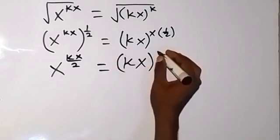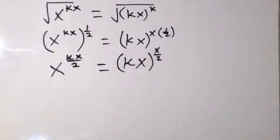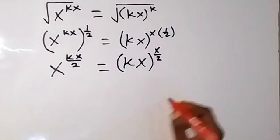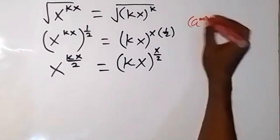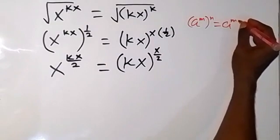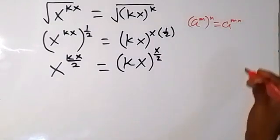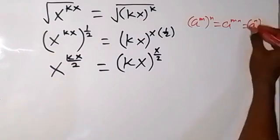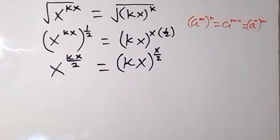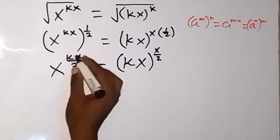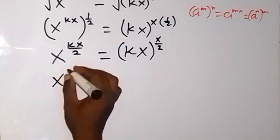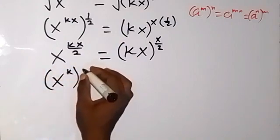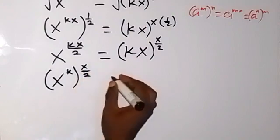From there we can apply one of the laws of indices: when we have a raised to power m, then raised to power n, this equals a raised to power m times n. We can also switch what we have inside. So from here I can separate k and take x over 2 outside, giving x raised to power k, then raised to power x over 2.